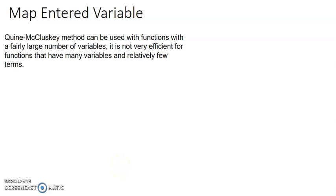In this video I'll be discussing the Map Entered Variable. In the previous classes we discussed what is Quine-McCluskey, what are the drawbacks of an entered K-map, and how to overcome that drawback. Quine-McCluskey was a very efficient method to overcome that drawback. Now we'll be discussing about the entered variable map.